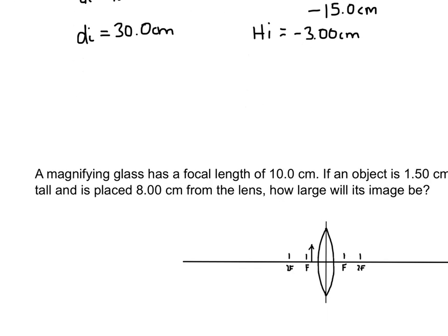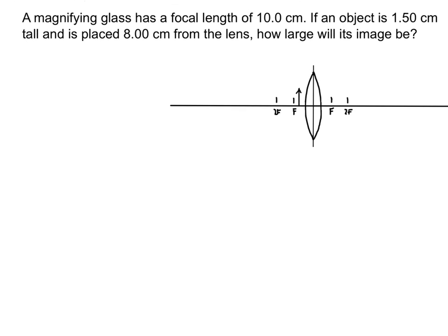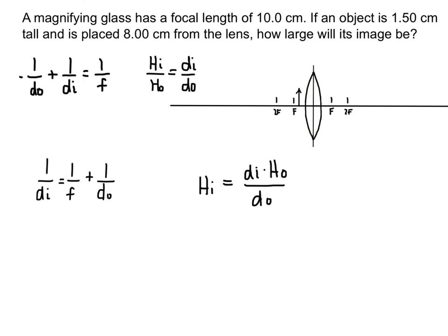Let's do another problem. In this case we've moved the object between the lens and the focal point, which is normally how we would use a magnifying glass — you'd be looking through the glass at an object held fairly close to it. Here are the two parts of the equation, already rearranged to solve for image distance and image height.